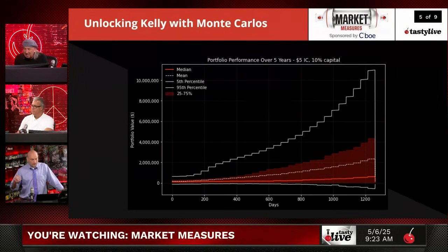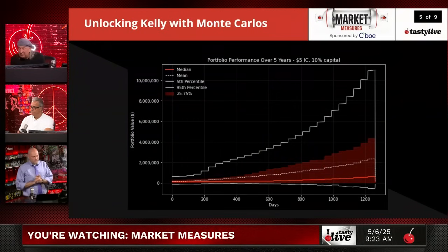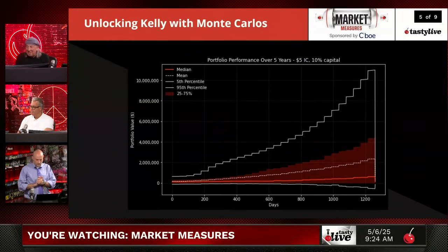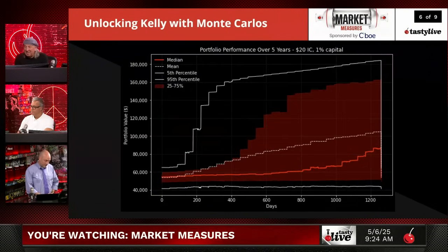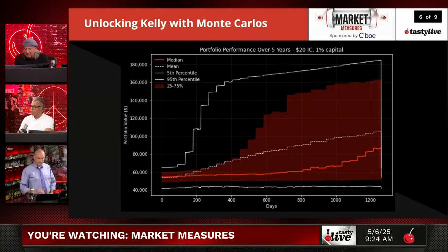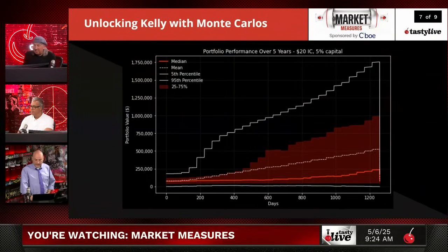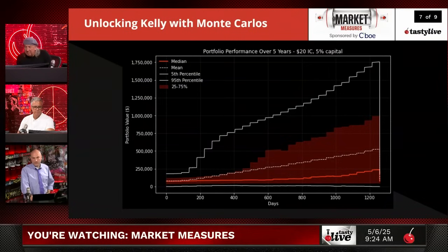Ten percent — now you have even greater volatility of movement. It's a matter of how you view risk. Now he's going to go to a $20-wide, which is the synthetic strangle. So this is basically just a strangle. Using one percent and then five percent — you can see that the probability of ruin just gets greater. To me, what this is telling me is that you've got to be more careful about making your bets when you increase the amount of capital in a particular trade. That's all we're looking at here — the takeaway is risk of ruin.